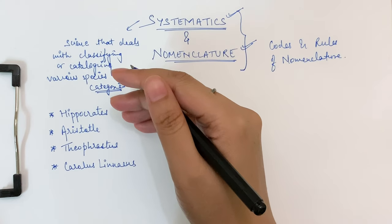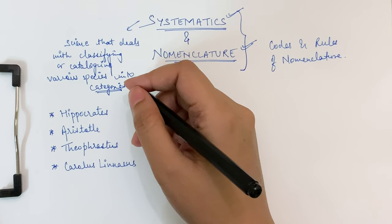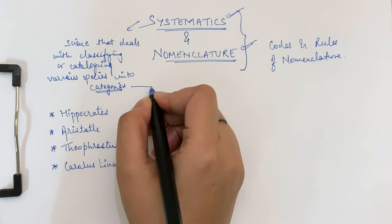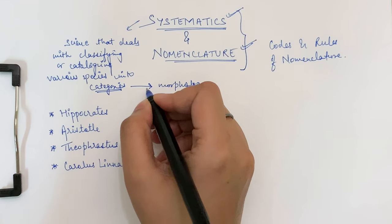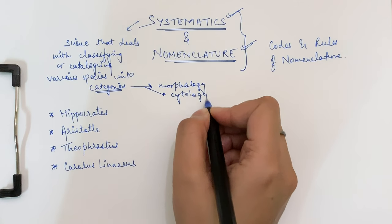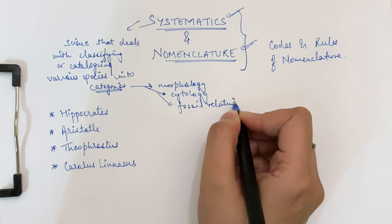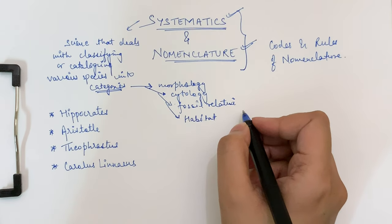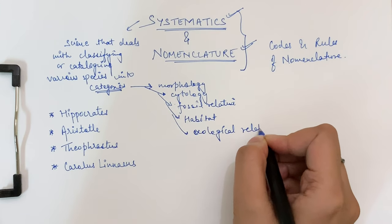These categories can be on the basis of morphology — that is external or internal structure — cytology, fossil record, or relatives they share. So categories can be named on the basis of morphology, cytology, fossils, relatives, habitat, or the ecological relationships that they share.